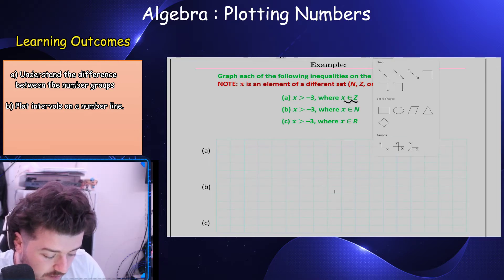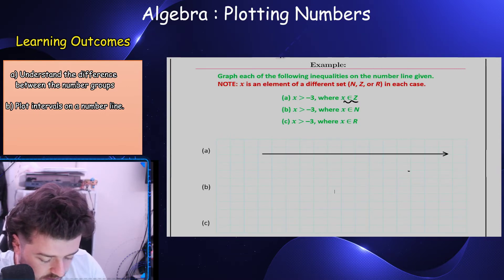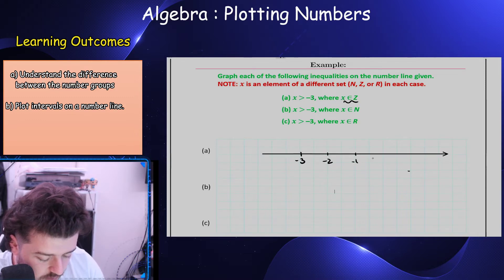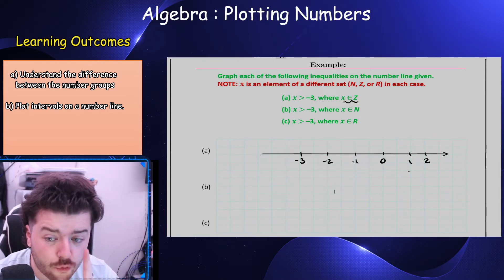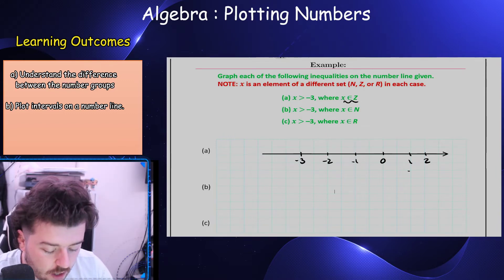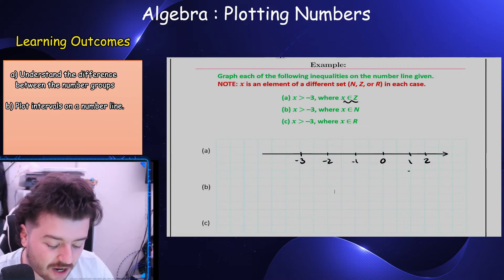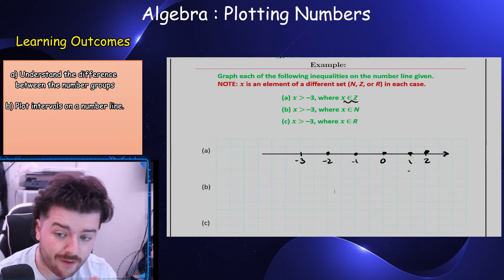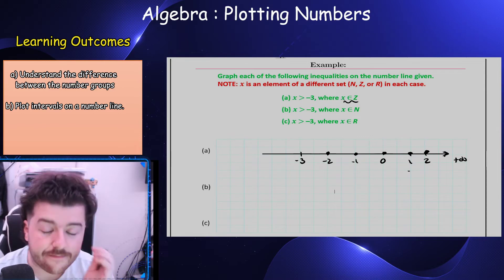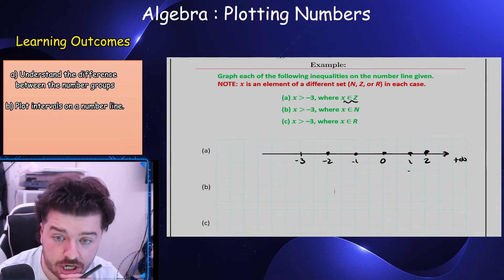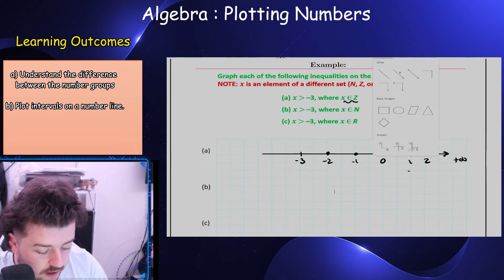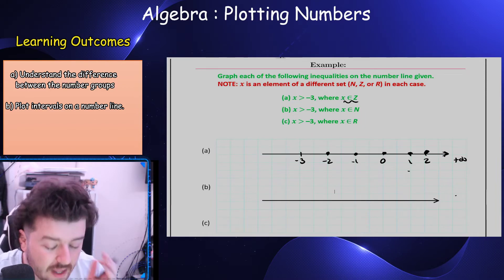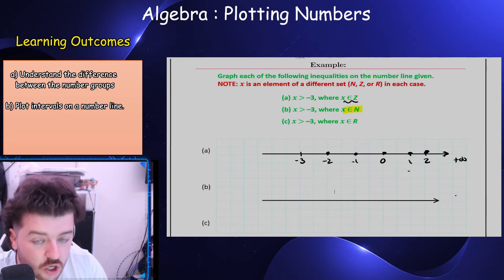So I draw my number line: minus three, minus two, minus one, zero, one, two. X is greater than minus three — I'm not including minus three, so I include minus two, minus one, zero, one, two, and then an arrow to indicate going on forever to plus infinity. That's the solution set when x is an integer.